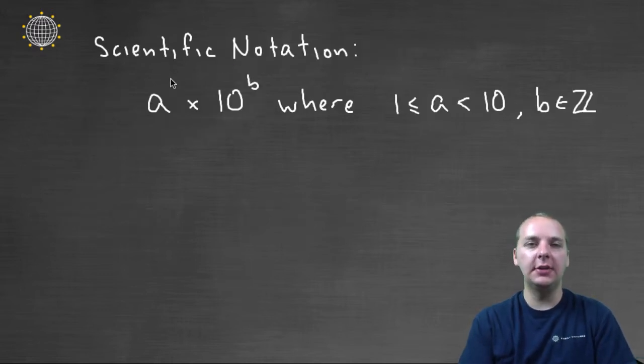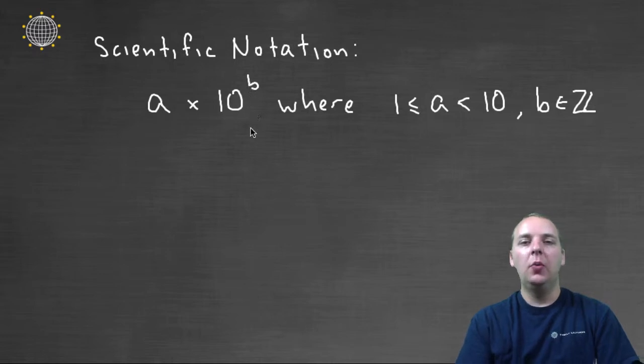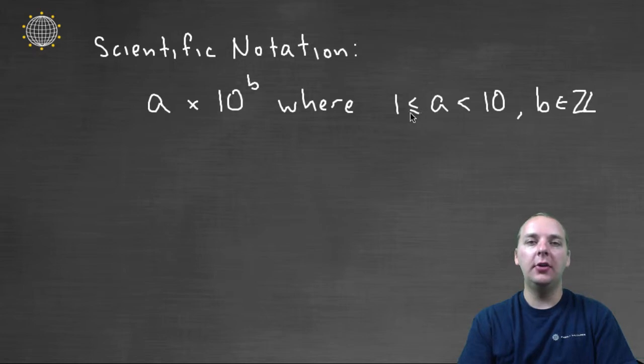So scientific notation, a number written in scientific notation looks like this: it's a times 10 to the b, where there's some restrictions on a and b. a has to be greater than or equal to 1, but strictly less than 10. And then b has to be an element of the integers.